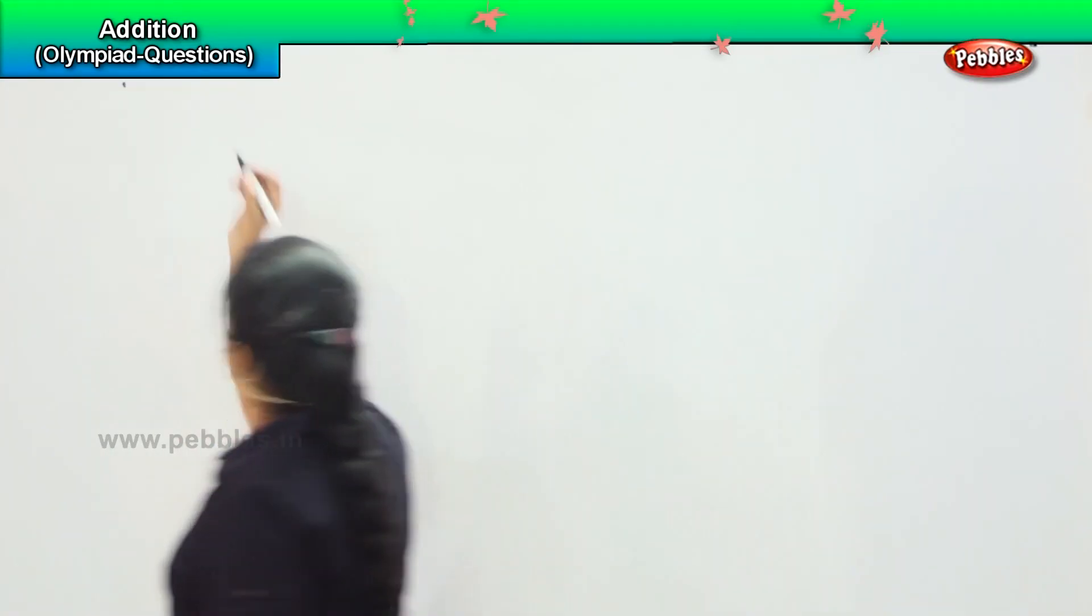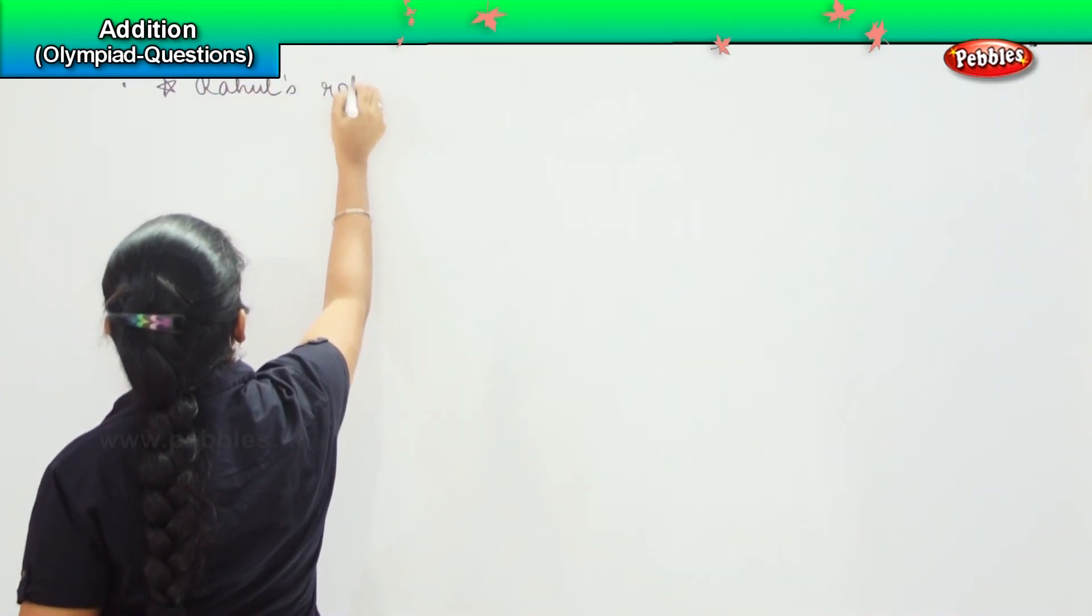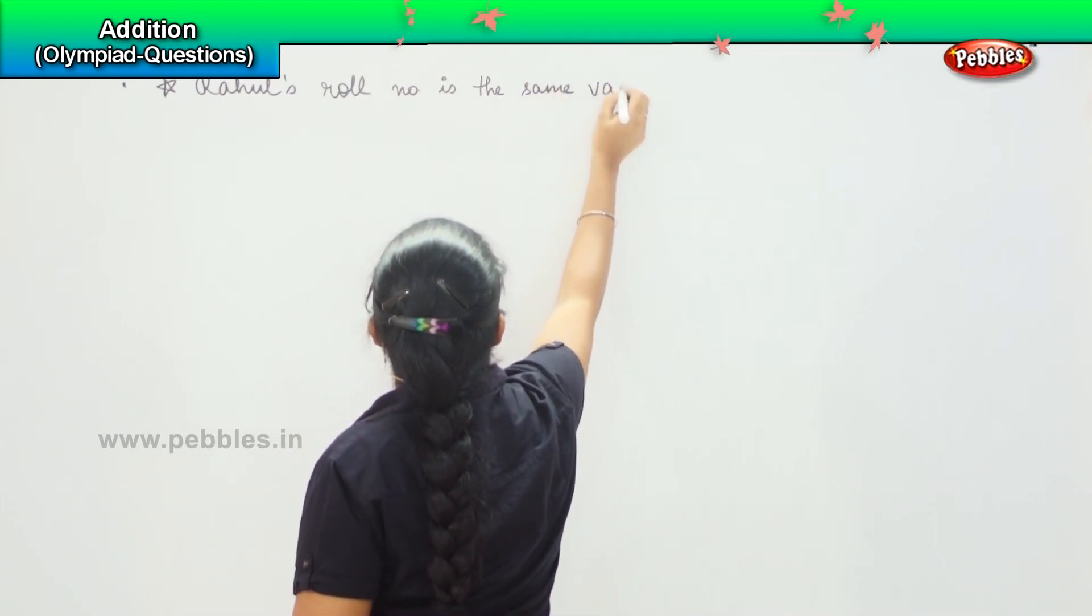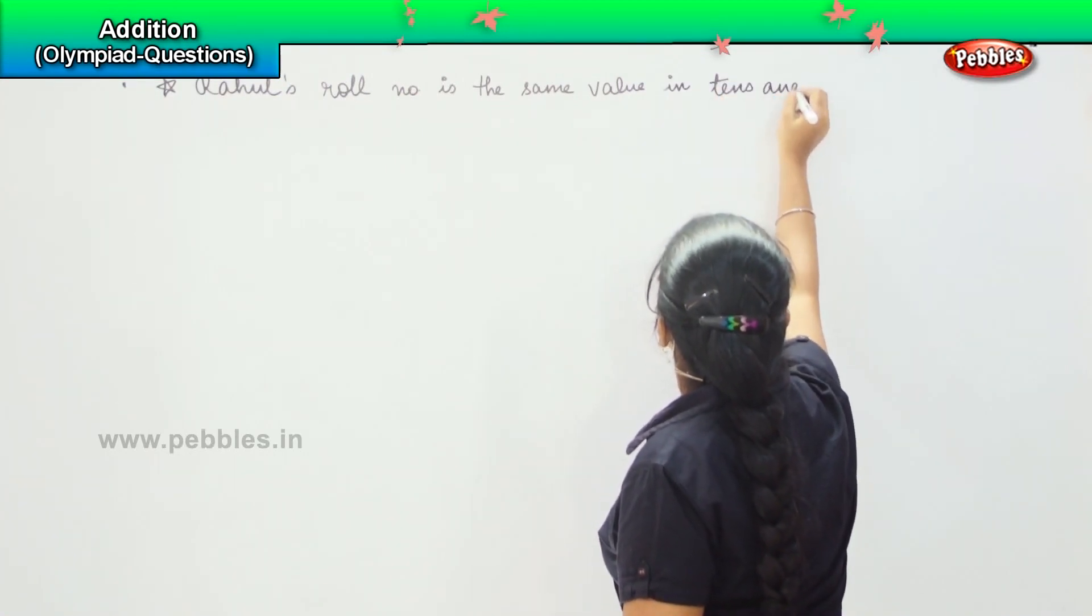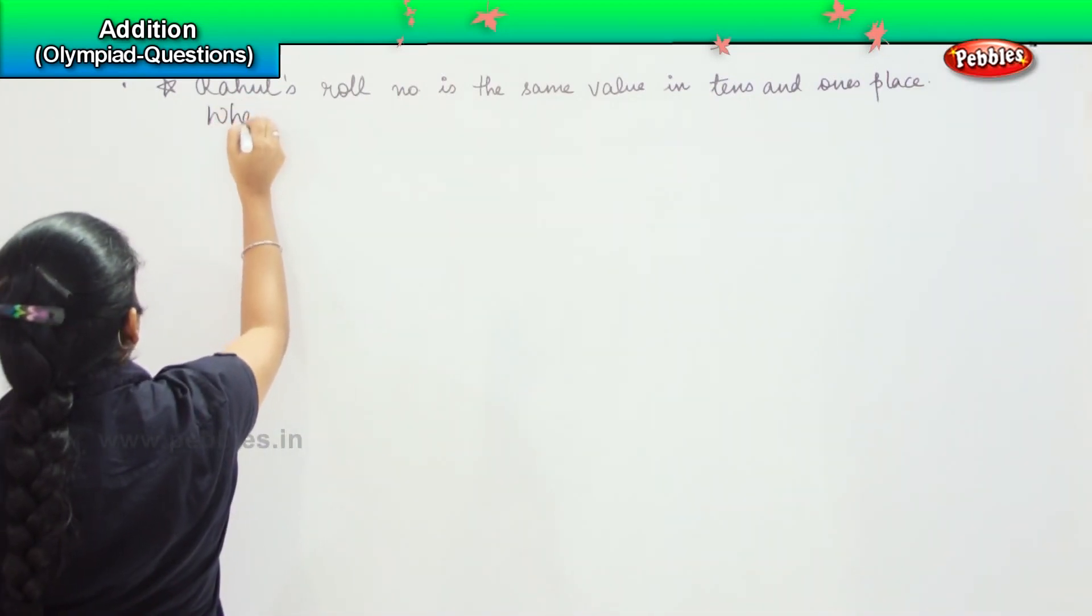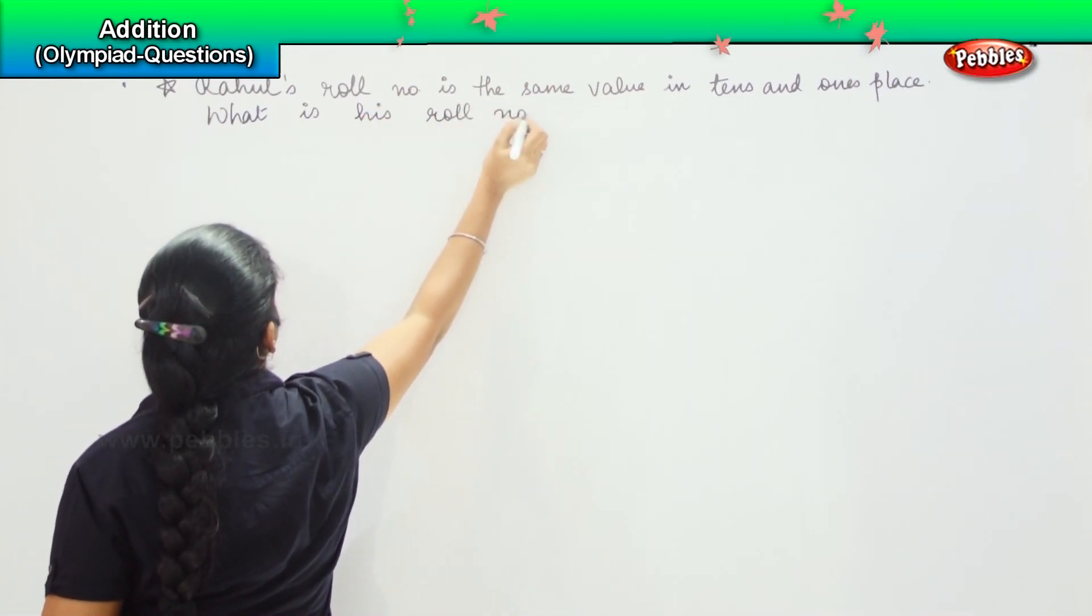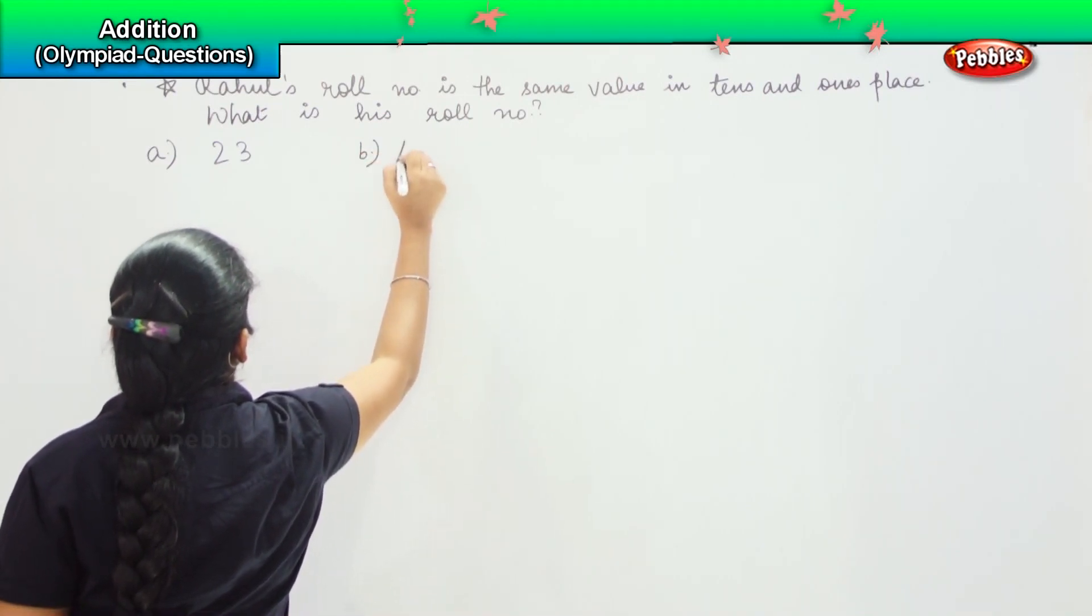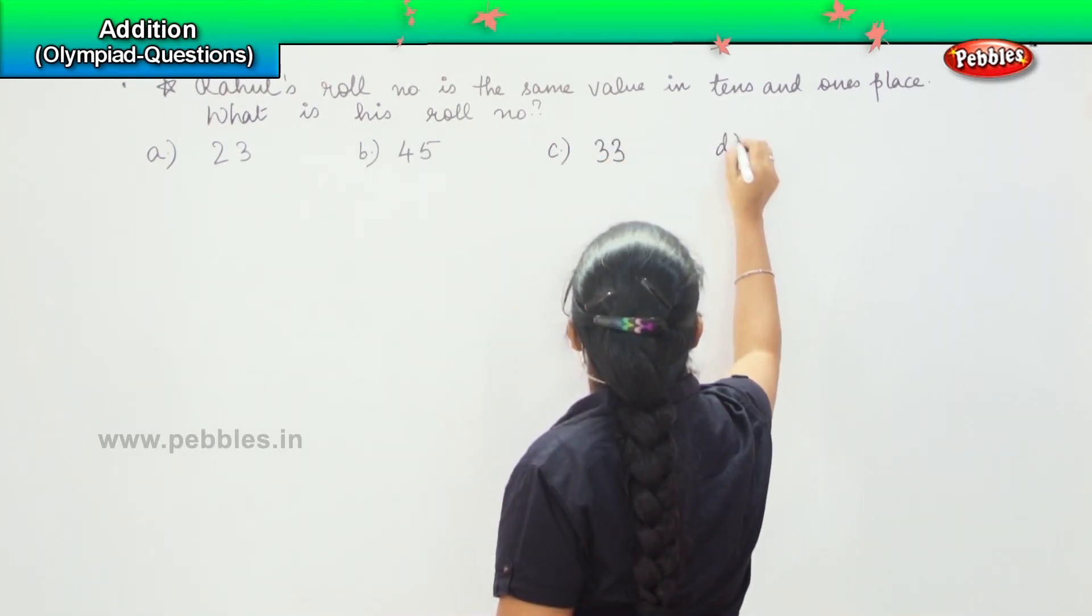The next question is: Rahul's roll number is the same value in tens and ones place. What is Rahul's roll number? Your options are: a) 23, b) 45, c) 33, d) none of these.